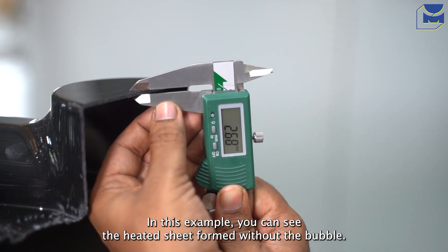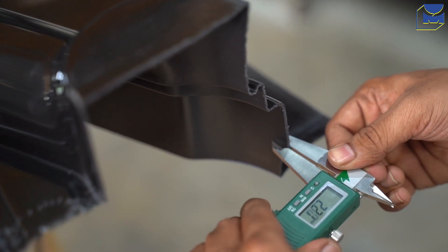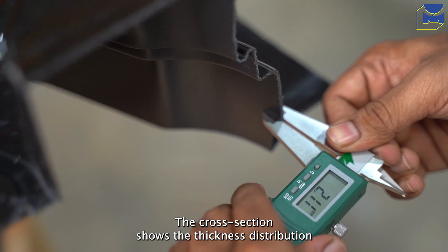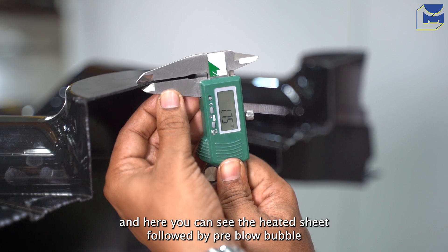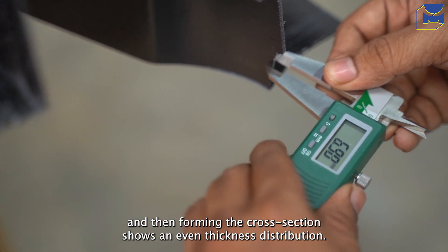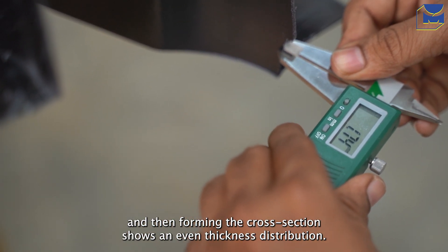In this example, you can see the heated sheet formed without the bubble. The cross section shows the thickness distribution. And here you can see the heated sheet followed by pre-blow bubble and then forming. The cross section shows an even thickness distribution.